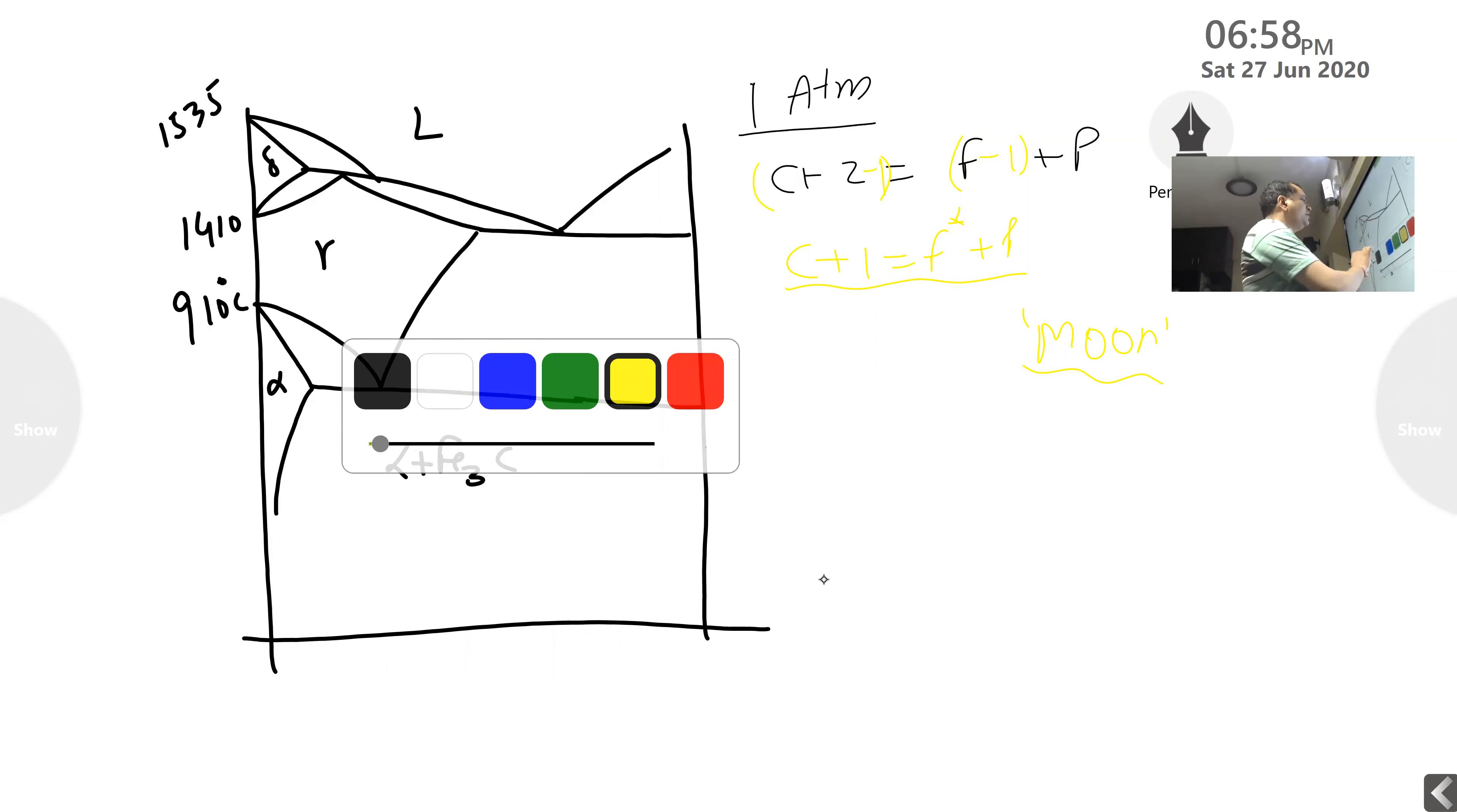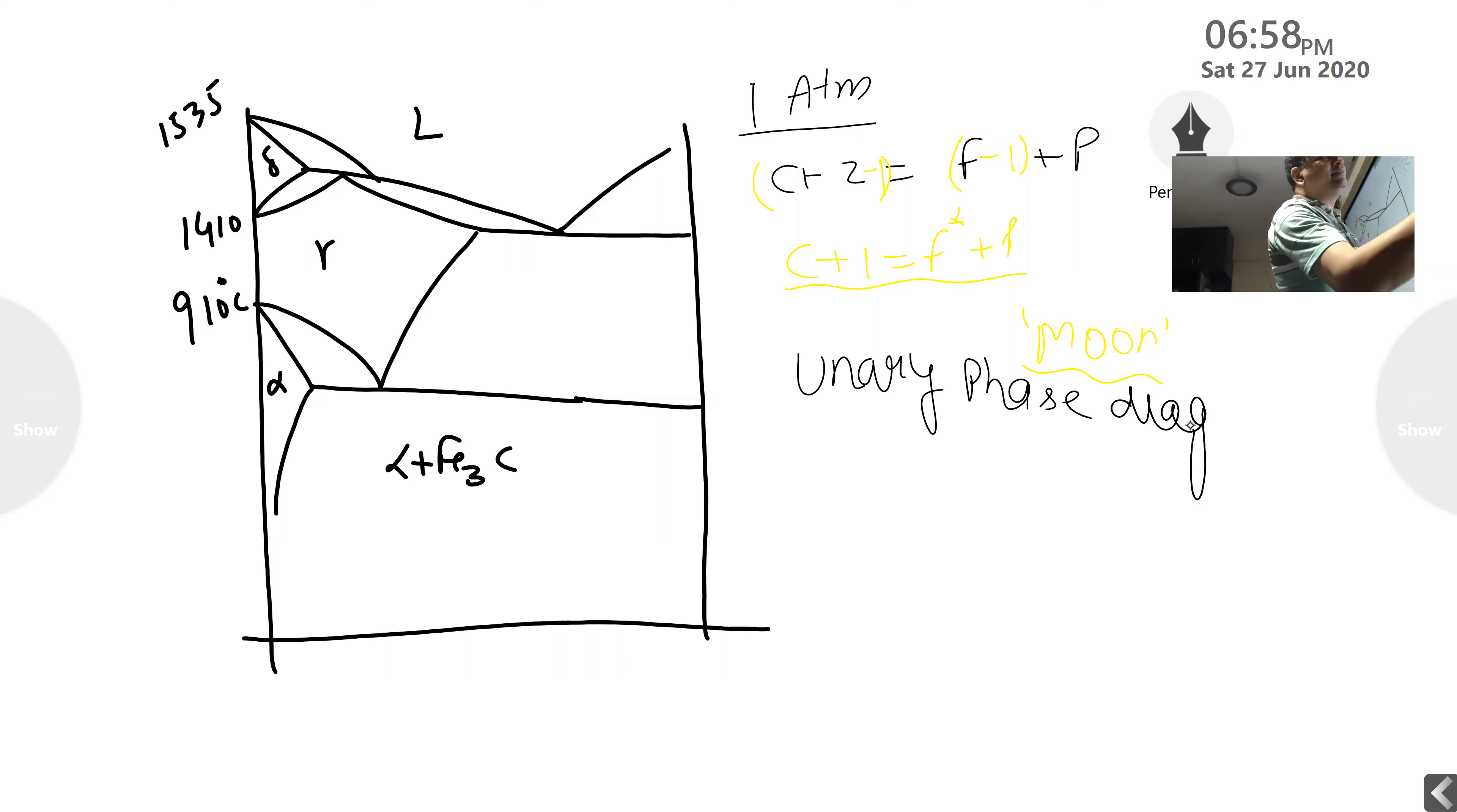If you see the unary phase diagram, unary phase diagram of iron, it is like this. Temperature is on the y-axis, pressure is on the x-axis. So once again, that's the reason I told you, you should be thorough in the material science to face any interview. We have to be very careful. Material science, in fact, is the most important subject in mechanical if at all you want to face an interview. So let's see how this happens.